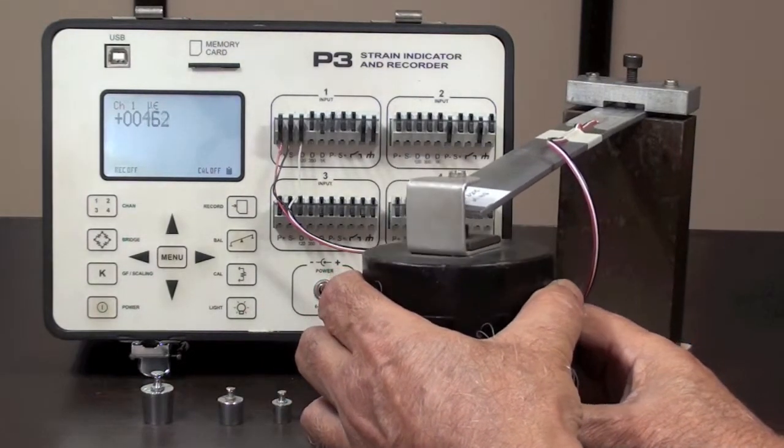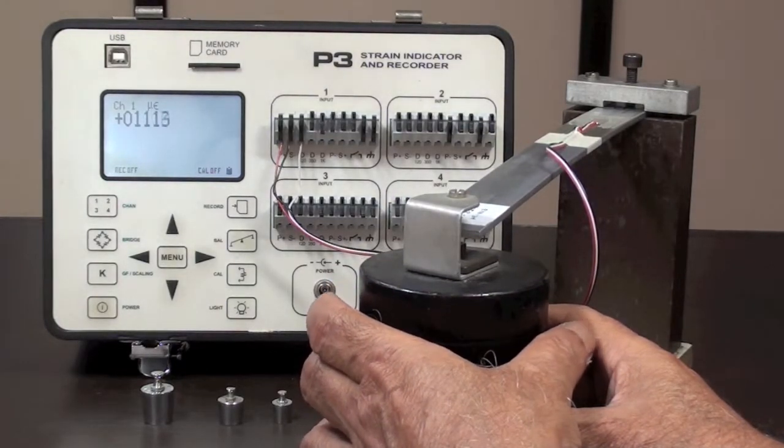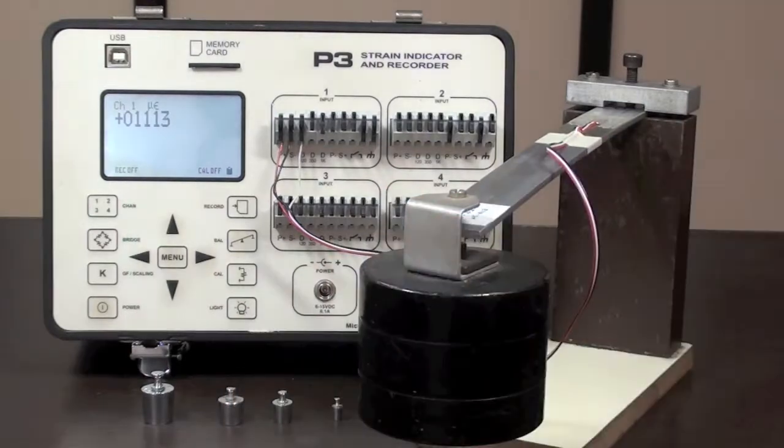When loaded with a 2 kilogram weight, the model P3 gives a reading very close to the calculated value, confirming the correctness of the strain measurement.